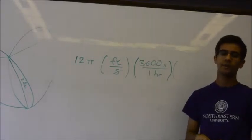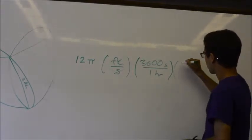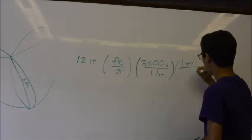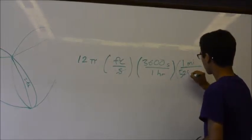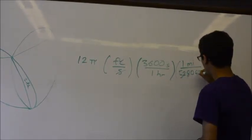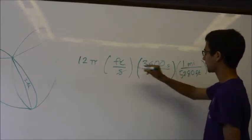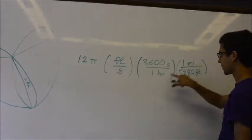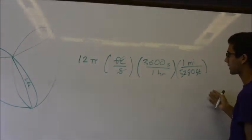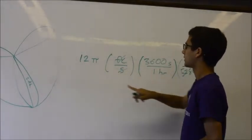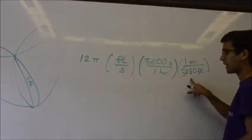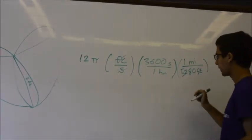So we know that it goes 4π and it does three rotations every one second. So 4π times three means that the tip of the fan blade rotates 12π feet every second. So now we have a speed except that they want the units in terms of miles per hour. So we need to do some converting.